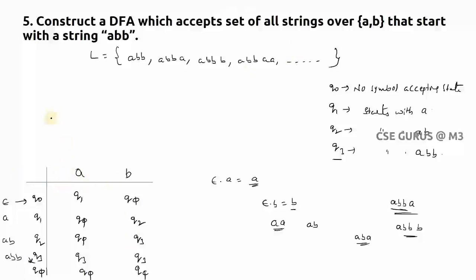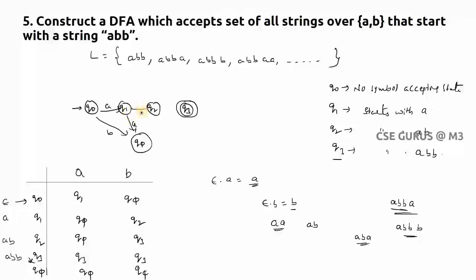The complete transition diagram from this table: Q0 on A goes to Q1, Q0 on B goes to Q_pi. Q1 on A goes to Q_pi, Q1 on B goes to Q2. Q2 on A goes to Q_pi, Q2 on B goes to Q3. Q3 on A goes to Q3 (self-loop), Q3 on B goes to Q3 (self-loop). Q_pi on A and B both self-loop. Q3 is the final state.